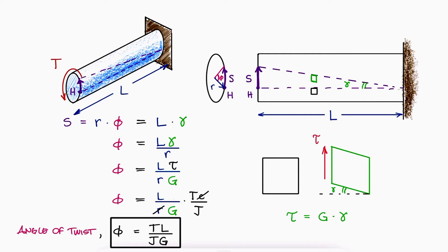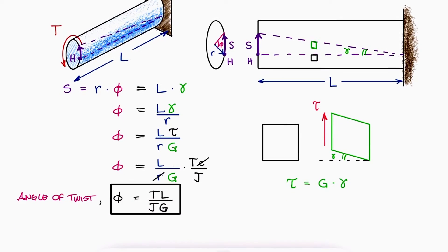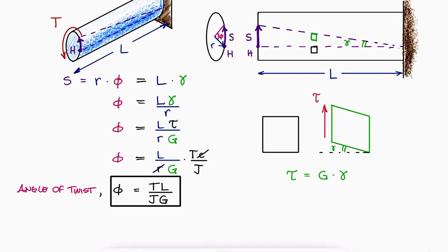This is the expression we will use to calculate the angle of twist in each section of a solid or a hollow cylinder. Now, for this derivation, you can already notice that the length L refers to the length from one point with respect to the other.